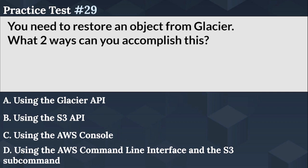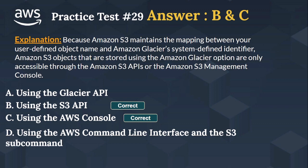The right answer is Options B and C. Amazon S3 maintains the mapping between your user-defined object name and Amazon Glacier's system-defined identifier. Amazon S3 objects stored using the Amazon Glacier option are only accessible through the Amazon S3 APIs or the Amazon S3 management console.